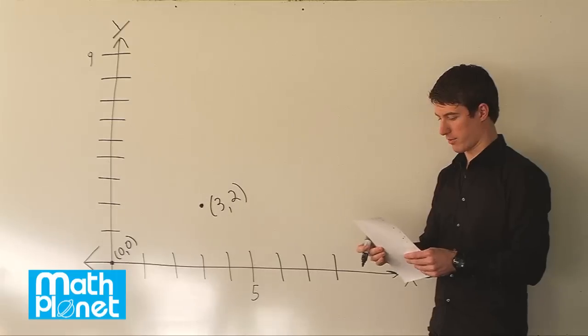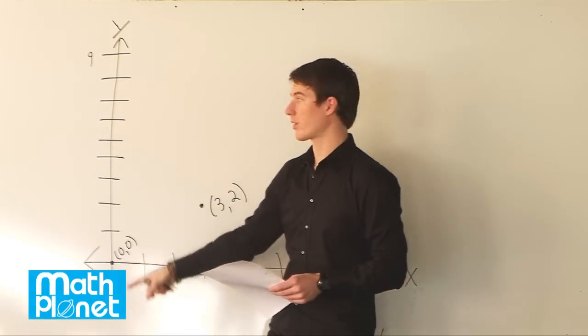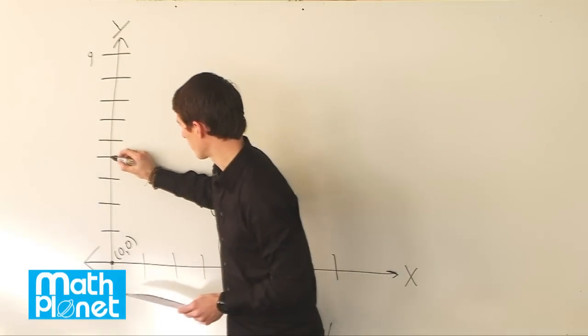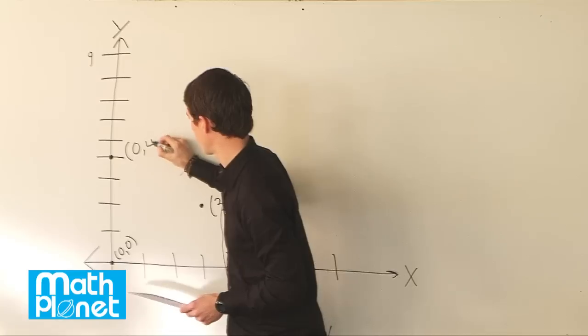Next we have 0, 4. So x is 0 and y is 4, so we're on the y axis here. So 1, 2, 3, 4. We're right here, the point 0, 4.